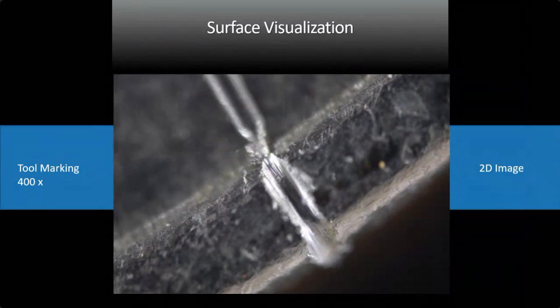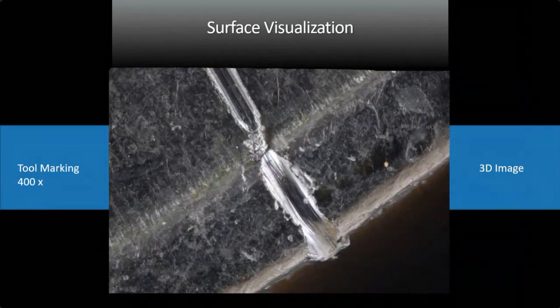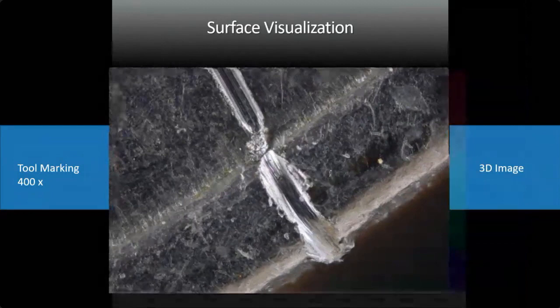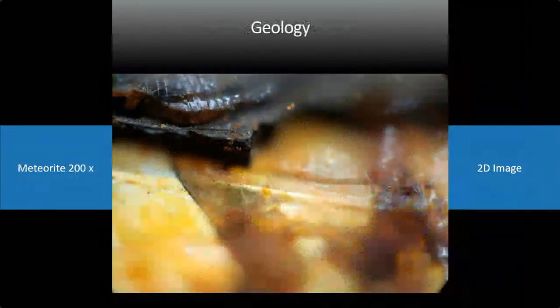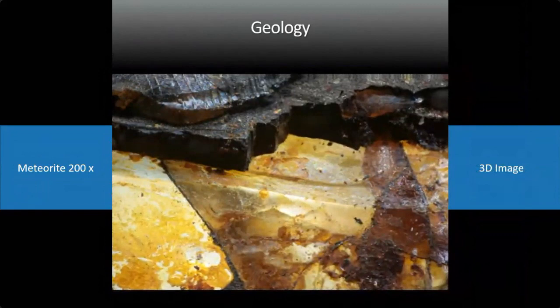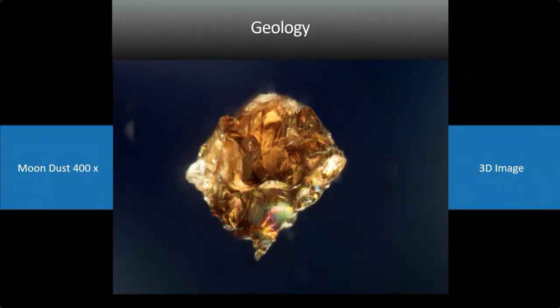For surface profiling, here's a 2D picture of a tool marking, and here it is in 3D. It reveals the hidden depth information and gives you all the information in one go so you can really analyze what's happening with your specimen. You can also see it as a color depth map, which allows clear quantification and comparison between images. In geology, here's a 2D image of a meteorite and there it is in 3D — much more information. Here's some moon dust from the Apollo 13 mission, shown as a compressed image and then as a rotational 3D image.